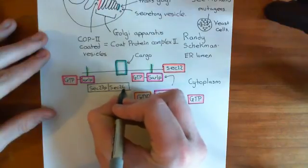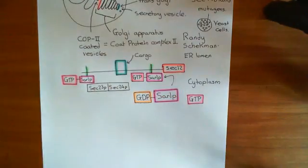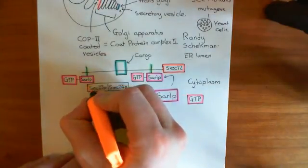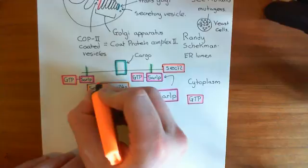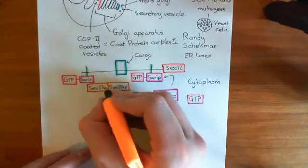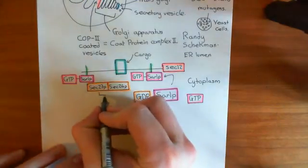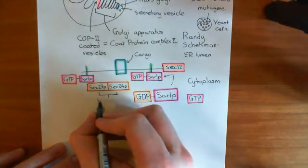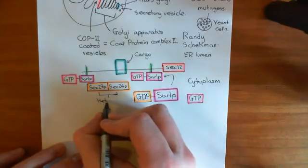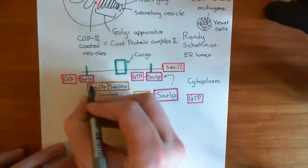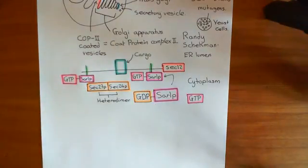So we have this heterodimer, sorry, not heterotetrimer, the other one's going to be a heterotetrimer. We have this heterodimer of proteins that are going to come and associate with the SAR 1p protein. So here, so far, we have these two proteins that are bound to each other. So sec-23 and sec-24 are separate proteins that are bound together to make this heterodimer.